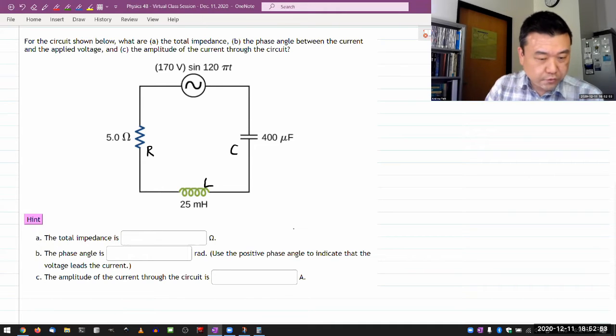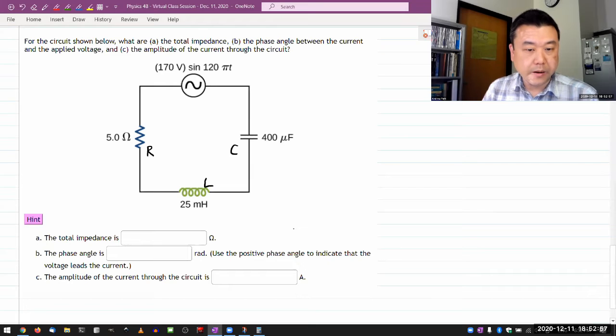All right, I want to do A, C, and then B because it's going to be easier that way. So for the total impedance, again, the relationship I rely on is that the equivalent impedance adds like resistors. So I have basically three resistors in series.